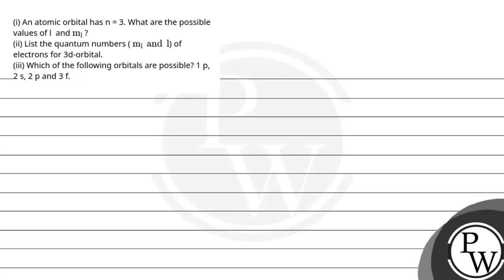Hello, let's read the question. The question says, first option is an atomic orbital has n equals 3. What are the possible values of l and ml?